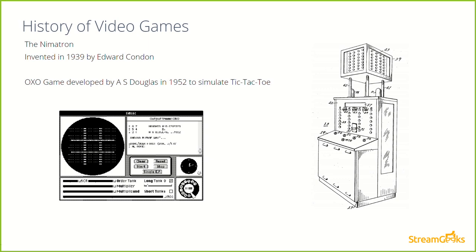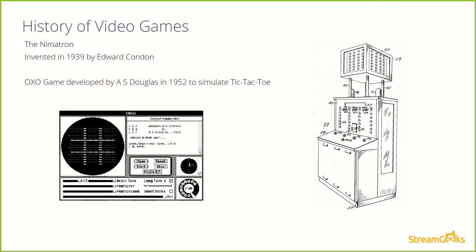Here you can see OXO, which was based on tic-tac-toe — another game designed to simulate a popular game already in existence. One of the things we'll learn is that a lot of video games have been designed based off of other games, and it helps students understand how they are put together. OXO was created by A.S. Douglas in 1952, and in the early days of video game development, most games were created by large companies and universities, because video games were generally being used to demonstrate computer power and find the modern limits of computer programming.